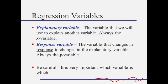The variable we want to predict will always be our y variable. We call that the response variable. The x variable is called the explanatory variable because it's the variable that we will use to explain another variable. It's sometimes called the independent variable, and again, this will always be the x variable.